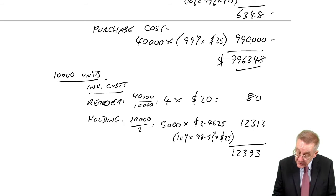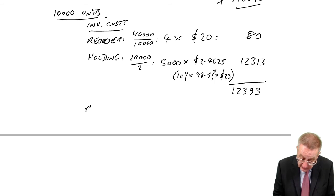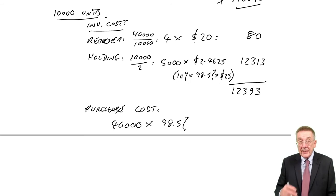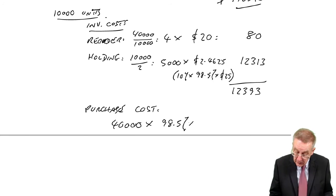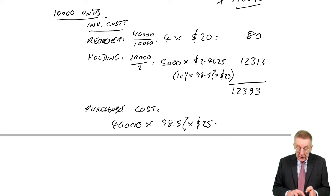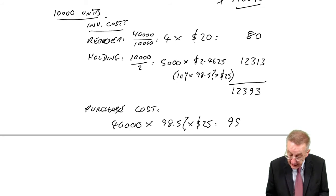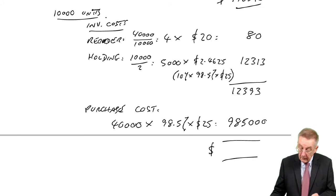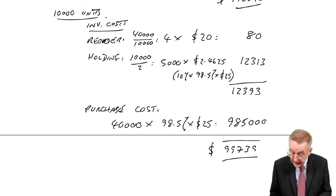But it could be worth it because the purchase cost is going to be lower. We still need 40,000 units. After a 1.5% discount, the cost is 98.5% of 25. So the purchase cost over the year falls to $985,000. And the two together, $997,393.